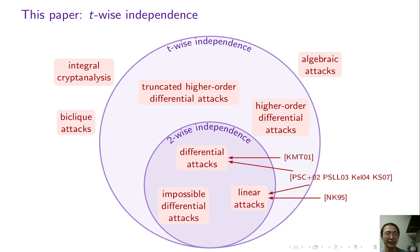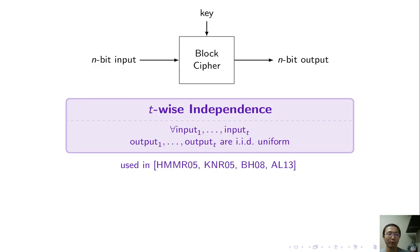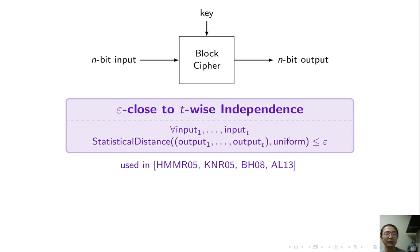Larger T implies resistance to more attacks. T-wise independence is a very natural property. For any T inputs, the corresponding T outputs should be uniform. We use a relaxed form. The corresponding T outputs should be epsilon close to uniform in statistical distance. For feasibility, the key length has to be at least T times the output length. This requirement can be ensured by the standard assumption of independent round keys, which is assumed in almost every work in the field, especially studying AES.